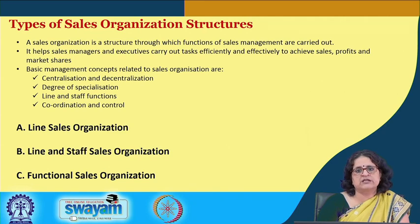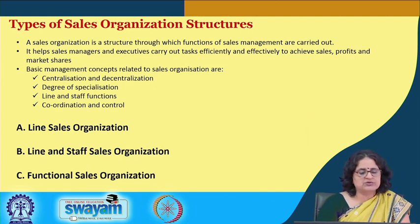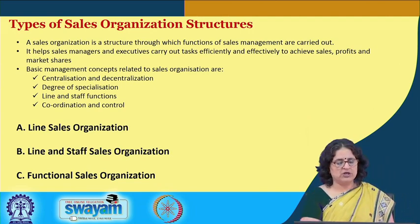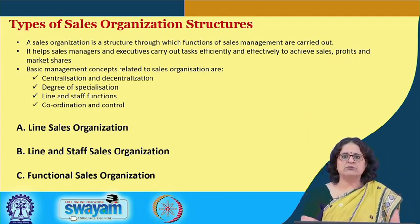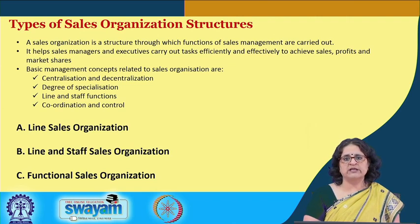The line and staff functions clearly spell out those functions which are important and critical for organizational objectives to be achieved, and those which are support functions. We also have mechanisms for control. When we talk about types of sales organization structures, we will deal with line sales organizations, line and staff sales organizations, and functional sales organizations.